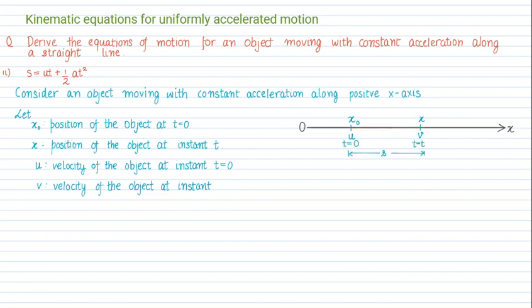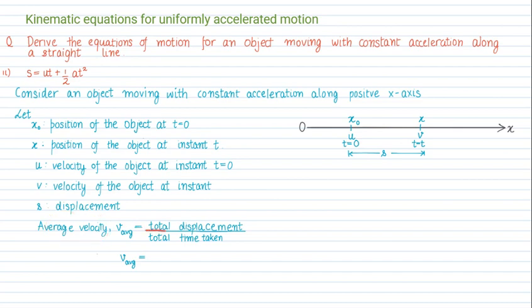Now, if I want to write the average velocity of the object moving from position x₀ to position x in time interval 0 to t, covering displacement s, then average velocity equals total displacement divided by total time taken. So v_average equals s divided by t (since t minus 0 equals t). Let us call this Equation 1.